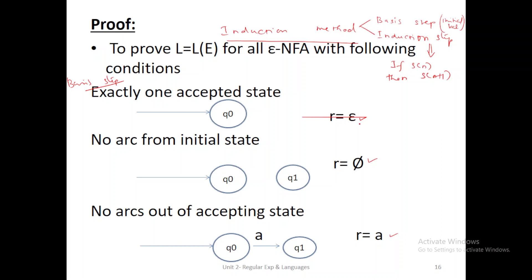What does the proof mean? If a regular expression contains only one symbol, you check the symbol. That symbol may be epsilon, or it may be the empty set (phi). For R equal to epsilon, you draw only one state with no self-loop or outgoing path from Q0 — this single state is also the final state. If R equals phi, there is no path from one state to another. If a regular expression contains one alphabet symbol, draw two states Q0 to Q1 with that symbol as the transition.